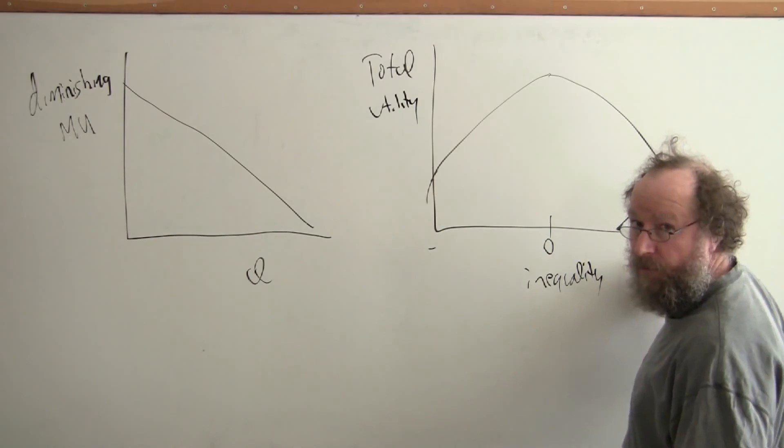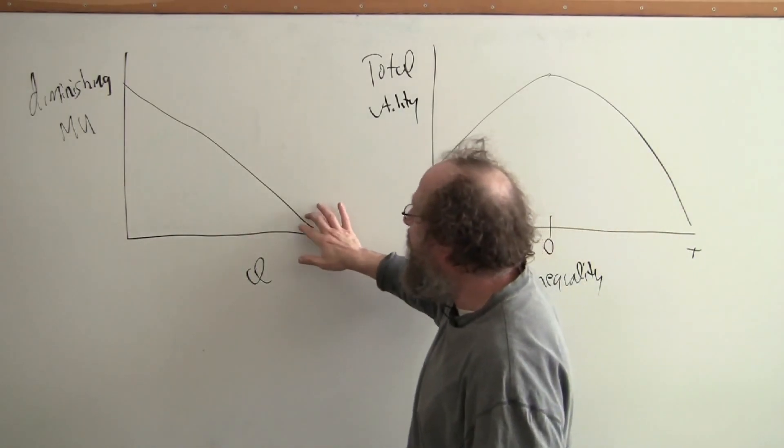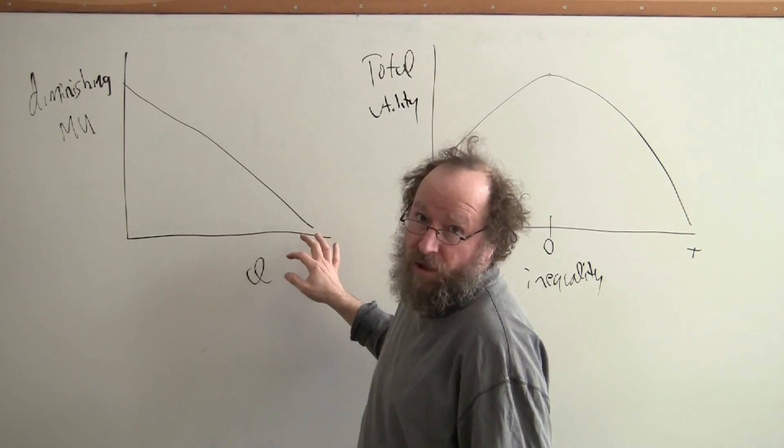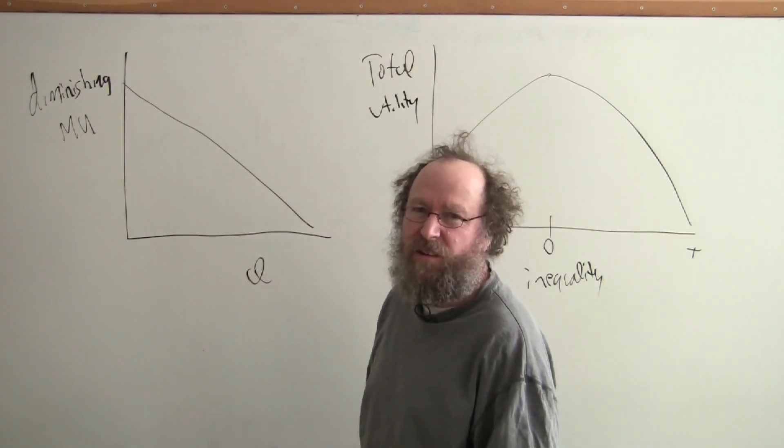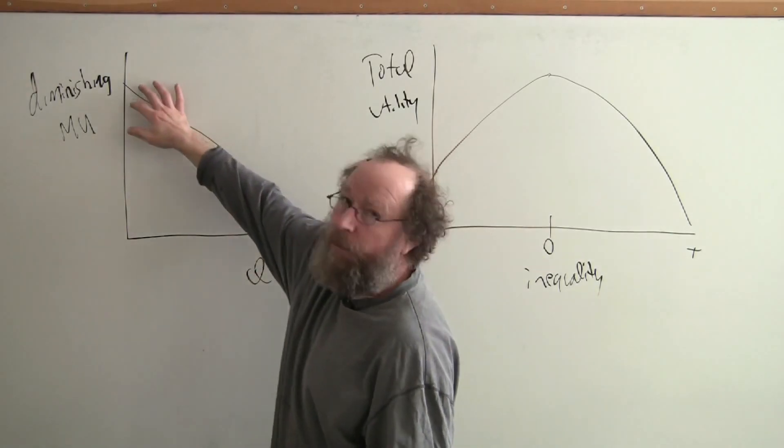This is due to the well-known fact that if the law of diminishing marginal utility is true, then any transfer of wealth from the rich to the poor will, ceteris paribus, increase the total utility until equality is reached.